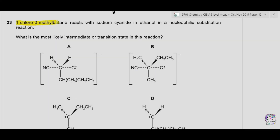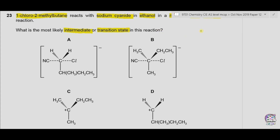Question 23. 1-Chloro-2-methylbutane reacts with sodium cyanide in ethanol in a nucleophilic substitution reaction. What is the most likely intermediate or transition state? We draw the structure: chlorine is on the first carbon, methyl is on the second carbon. As chlorine is more electronegative than carbon, carbon becomes partial positive and chlorine partial negative. Cyanide acts as the nucleophile, attacking this carbon atom while the C-Cl bond breaks and Cl takes the electrons.